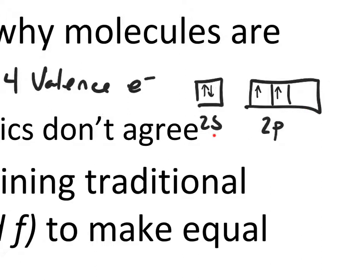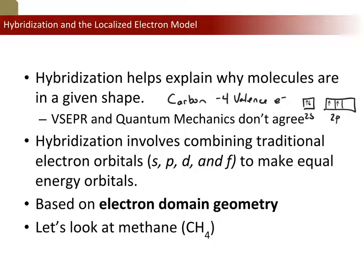Aufbau's principle also says you have to fill up the lowest energy level and available orbital first. So you have to put two in the 2s, and then the remaining two go into the 2p. If you look at the available electrons that carbon has that can participate in bonding — where bonding electrons are ones that are unpaired and looking for a partner — then according to the quantum mechanical model, carbon only has two available electrons for bonding, and the other two are happy and stable.